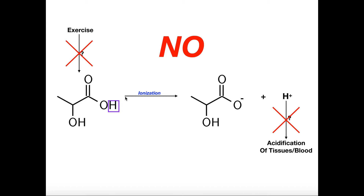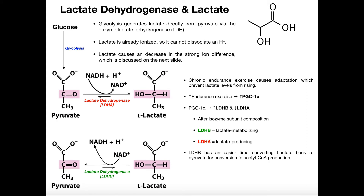That's the first misconception and it's still thought that way in some circles. So here we're actually going to discuss what actually happens with lactate or lactic acid and how it produces acidification of tissues and the blood. Glucose is a major nutrient of cells such as skeletal muscle, and glucose will be converted into pyruvate by the process of glycolysis — a 10-step process — and we get pyruvate. Then pyruvate can be converted into lactate through the action of lactate dehydrogenase (LDH). So glycolysis generates lactate directly from pyruvate via LDH. Lactic acid is not directly produced by glycolysis.